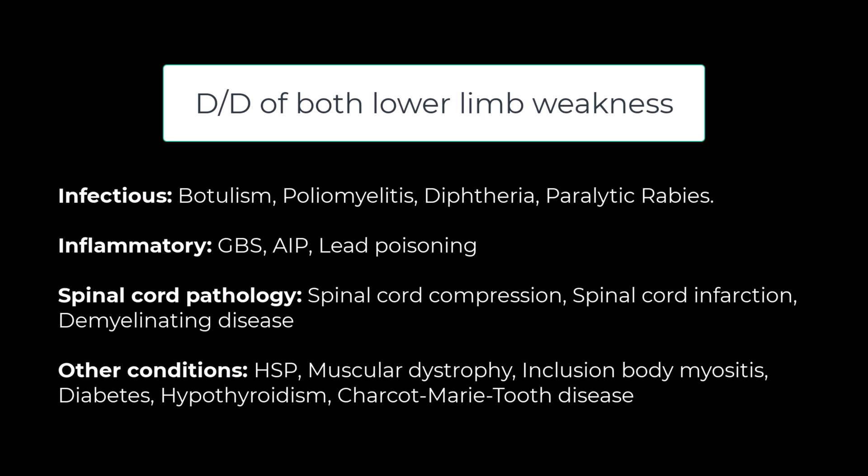Similarly, we would exclude paralytic rabies by asking about any history of animal bite. For inflammatory causes, GBS is a very important cause because it can cause ascending paralysis of both lower limbs, and it also goes in line with a history of three days of both lower limb weakness. Spinal cord compression can also cause both lower limb weakness, but this type of condition would also cause problems in sensory pathways and may cause spasticity. Spinal cord infarction can also cause both lower limb weakness, but brain infarction or stroke usually causes single lower limb weakness.